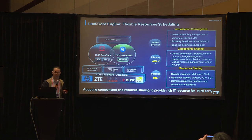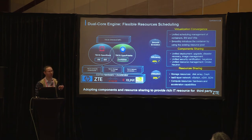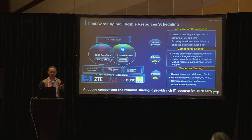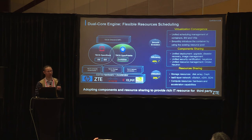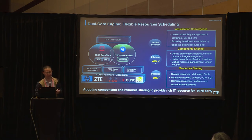Let's see how ZTE provides the dual cloud engine to enable flexible resource scheduling. Normally when we talk about virtual machines and containers, we think about OpenStack and Kubernetes separately with two separate resource pools. Here, our solution is a converged OpenStack and Kubernetes — we share components like Keystone, Cinder, and Neutron, so that we can create a mixed, unified cloud.